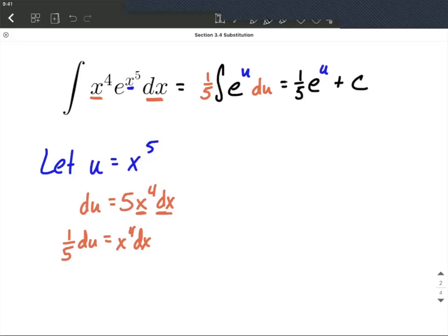And then to finish this up, well, our answer right now has u involved. Our original only had x's, so we need to get back to x's. So to do that, what we're going to do is use our definition of u from the very first line I wrote down, and we're going to replace u with x to the fifth. Bring along that plus C, plus a constant at the end.